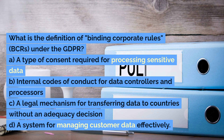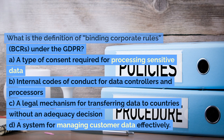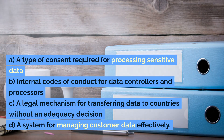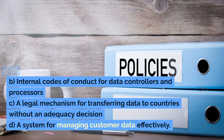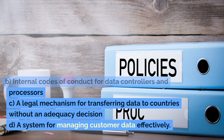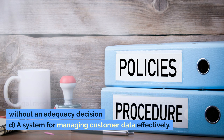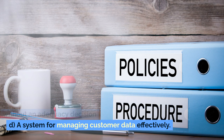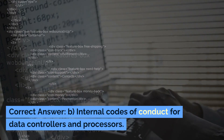What is the definition of binding corporate rules (BCRs) under the GDPR? A. A type of consent required for processing sensitive data. B. Internal codes of conduct for data controllers and processors. C. A legal mechanism for transferring data to countries without an adequacy decision. D. A system for managing customer data effectively. Correct answer: B. Internal codes of conduct for data controllers and processors.